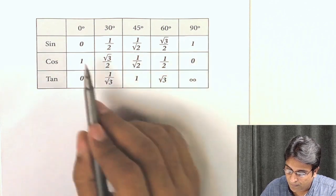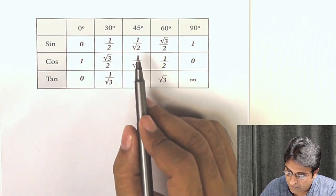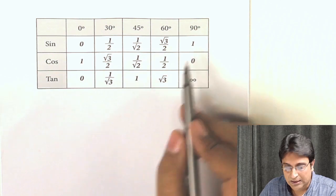Look at the first row: you've got 0, half, 1 by root 2, root 3 by 2, 1.